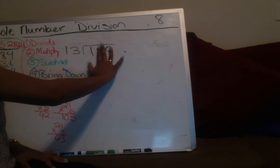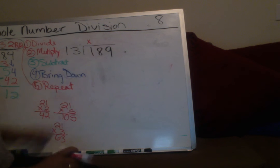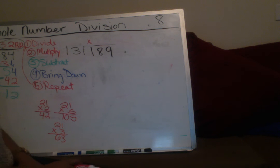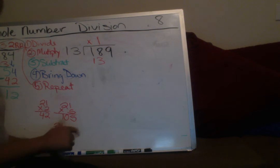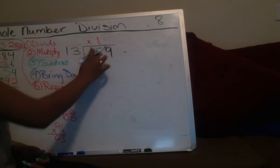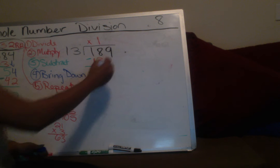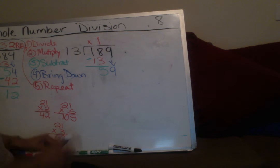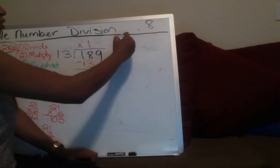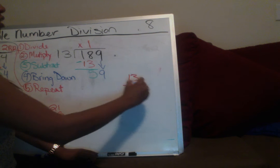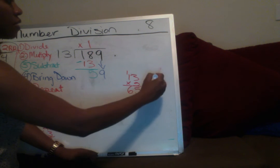New problem with divisor 13. Can I put 13 evenly into one piece? No. Can I put 13 into 18? Yes, only one time. 13 times 1 is 13. Now subtracting: 8 minus 3 is 5, then bring down the 9. Now figure out how many times 13 fits into 59. Try 13 times 5: 5 times 3 is 15, 5 times 1 is 5 plus 1 is 6 — that's 65, a little too big.